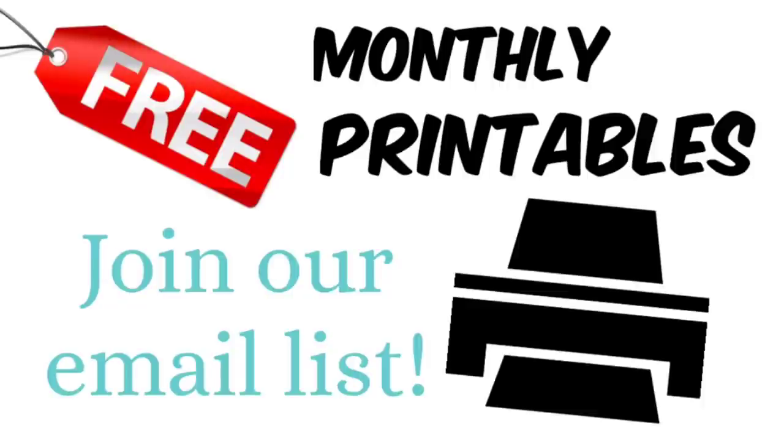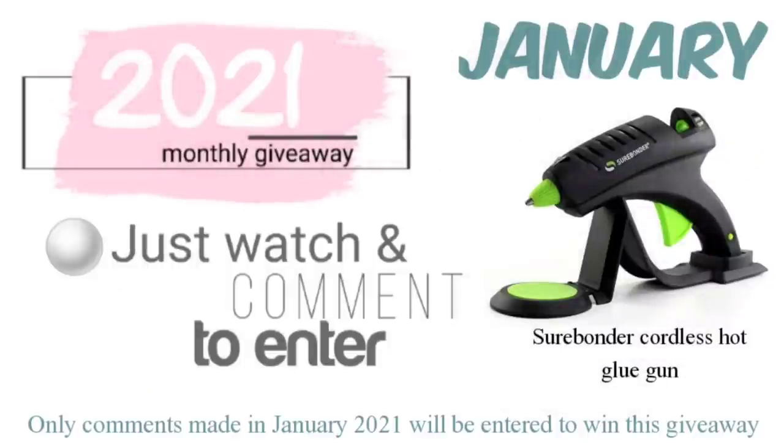Friends, don't forget that I am going to be sending monthly printables of different designs that I use throughout my videos. It'll be sent the last Saturday of every month. If you want to join my email list, the link to join is down in the description box. After you watch this video, just check it out. All you got to do is click on the link, add your email address, and that's it. I am also going to do a giveaway every month this year. For this month, I am giving away a Surebonder cordless hot glue gun. All you have to do is watch and comment to enter. To be entered for the hot glue gun this month, only comments made in January 2021 will be entered for the giveaway.